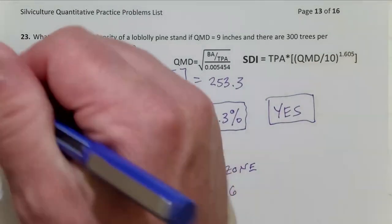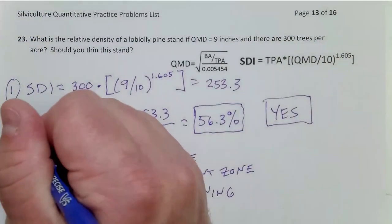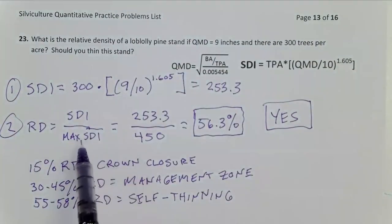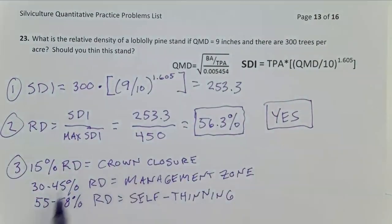So step one, calculate SDI. Step two, calculate relative density based on knowing the max SDI for your species. Step three, know what these thresholds are, and correctly interpret relative density. So that's how you're going to work all of these problems. We have a number of other problems here. They're all similar in nature, but it's the same basic three steps for all.